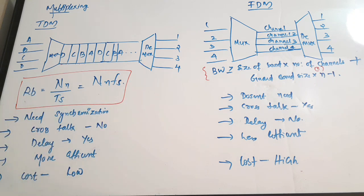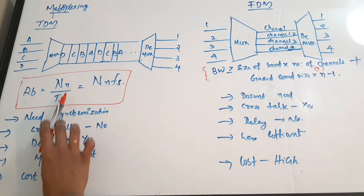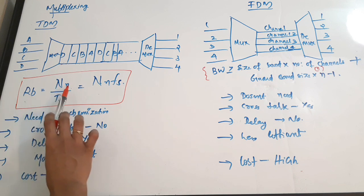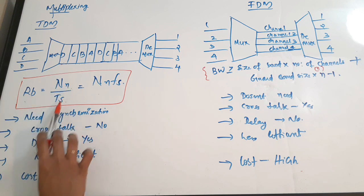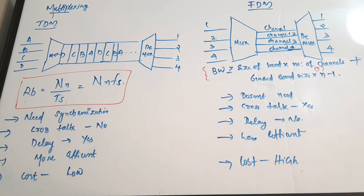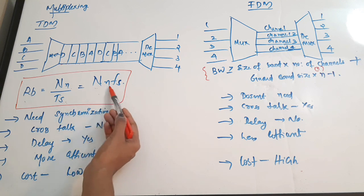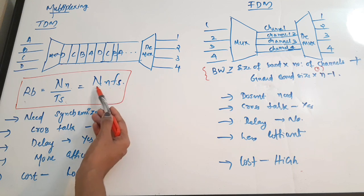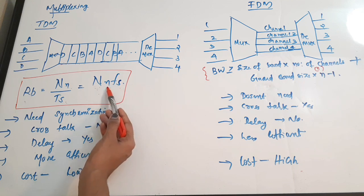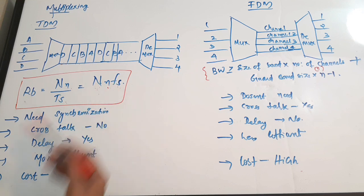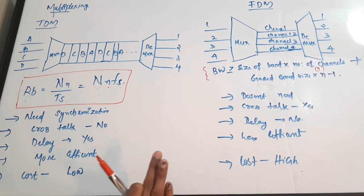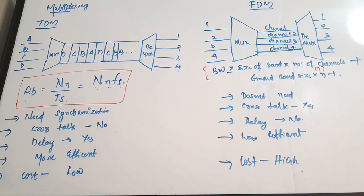The bit rate for TDM is RB = N × n / Ts, where N is the number of messages, n is the number of bits, and Ts is the sampling period. This can also be written as N × n × Fs, where Fs is the sampling frequency.